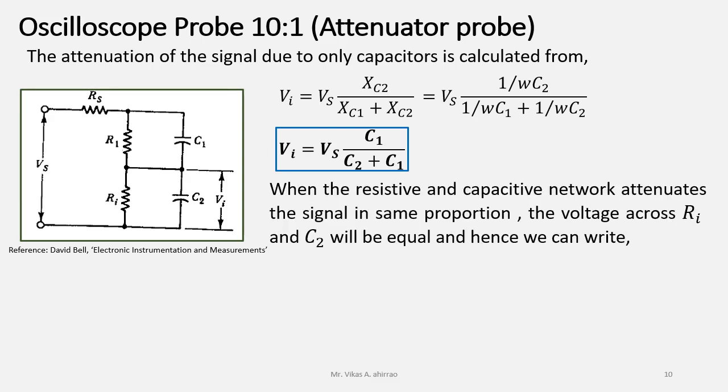When the resistive and capacitive network attenuates the signal in the same proportion, which is the requirement, the voltage across Ri and C2 will be equal and hence we can write Ri upon R1 plus Ri is equal to C1 upon C2 plus C1.